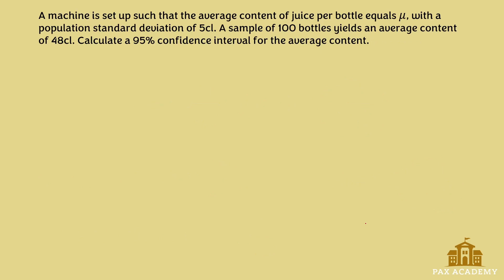Let's apply these formulas to an exercise. First of all, like always, let's write down the data we can gather from the question. The population standard deviation, sigma, is 5. The sample size is 100, because there are 100 bottles. And the average content, so the sample mean, is 48 centiliters.